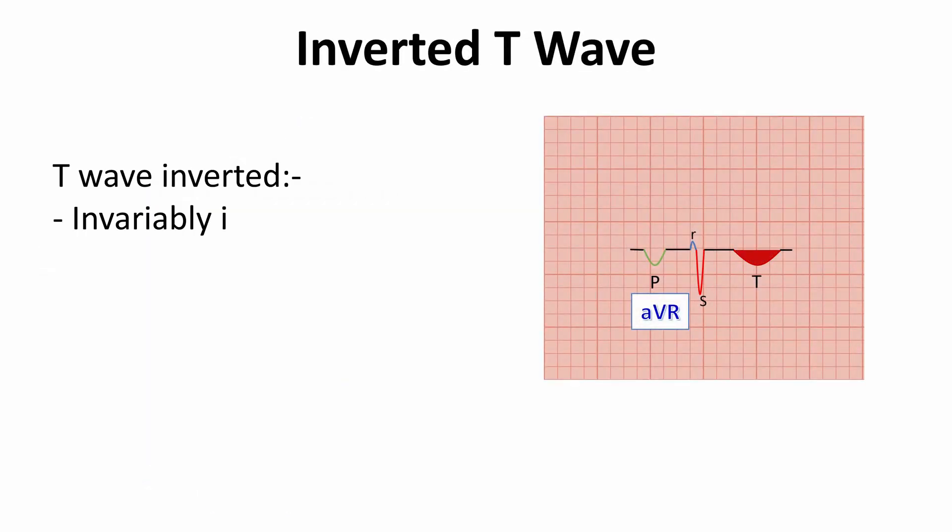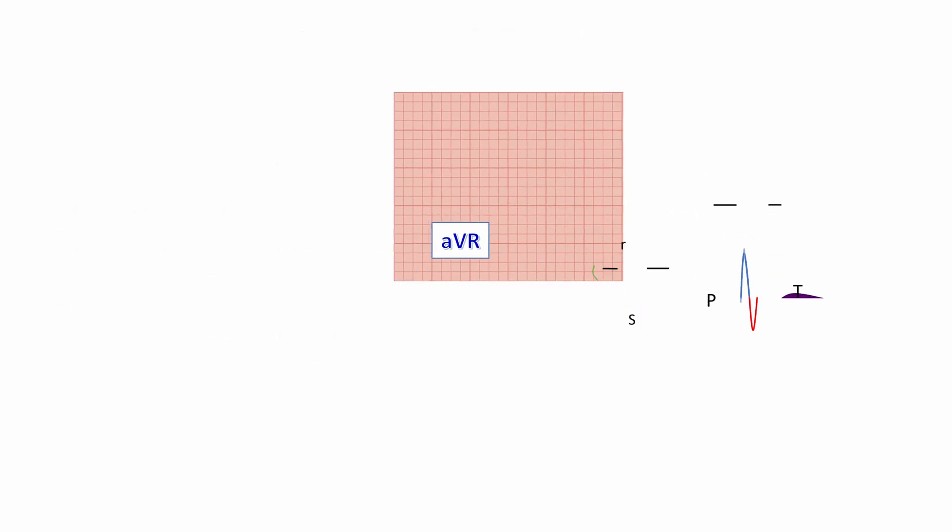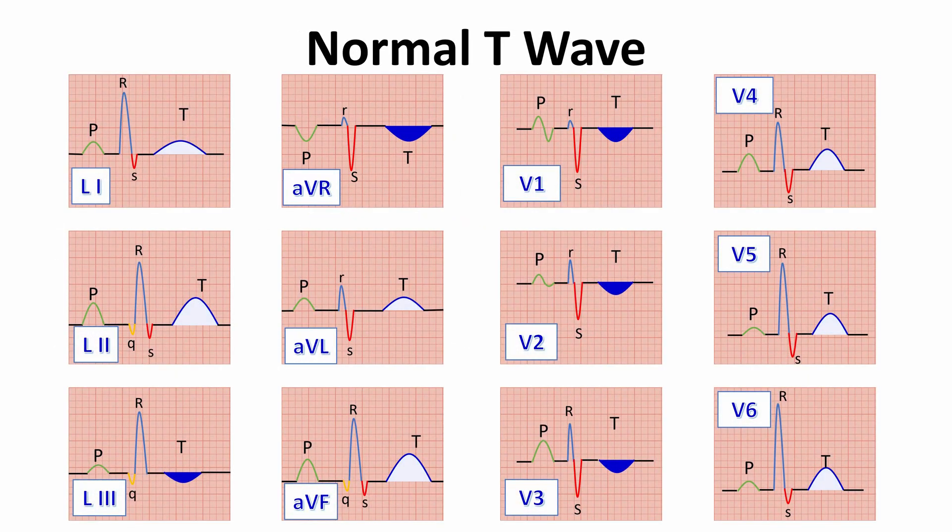Let's now explain when T wave becomes inverted. Normally, the T wave is invariably inverted in lead AVR, often inverted in lead V1, occasionally in leads V2 and V3, and sometimes in lead III.